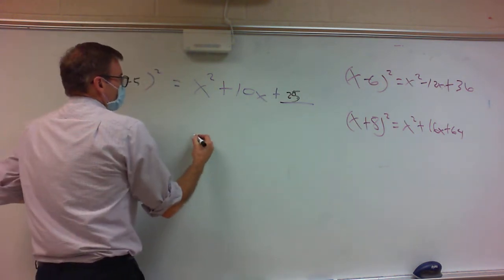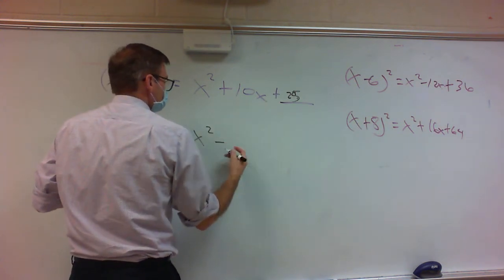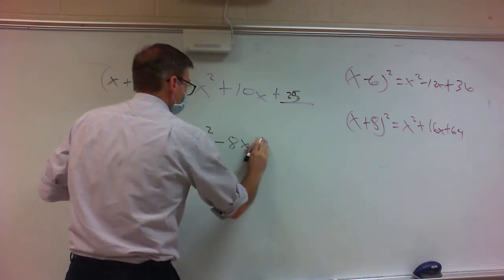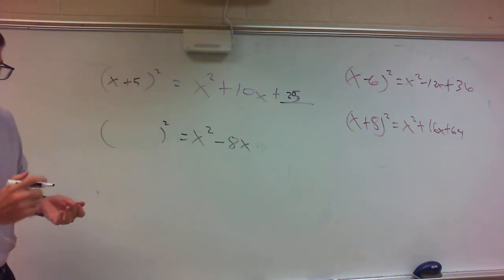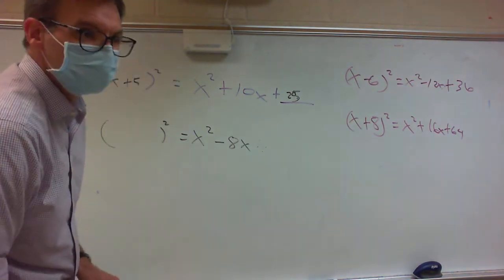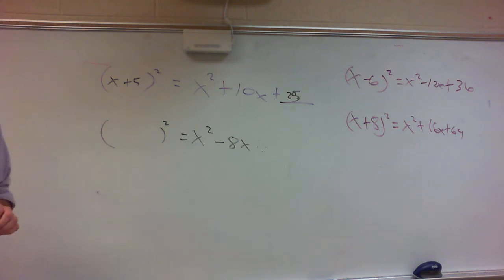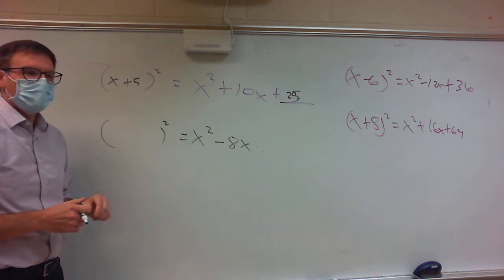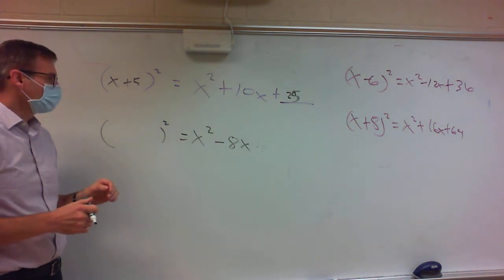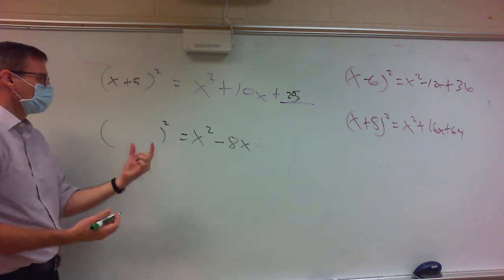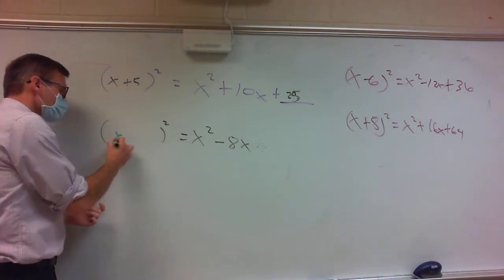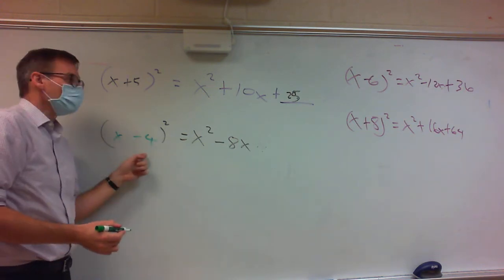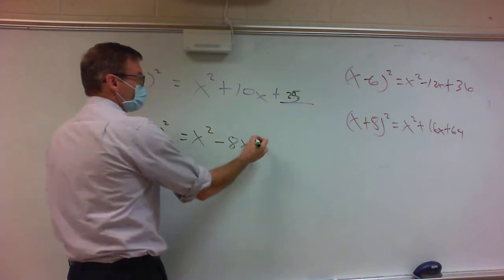Let's try it again. Say I give you x squared minus 8x. The first thing you need to think about is what goes here in the binomial — there's always going to be an x. What number has to go there? Negative 4 — we take half of negative 8. And once you know this number, the last term is easy: take negative 4 and square it, giving plus 16.